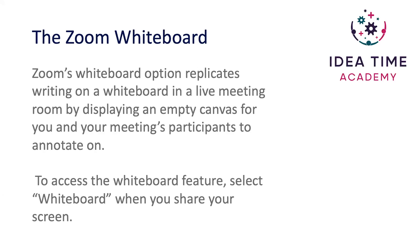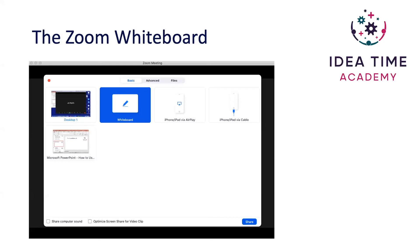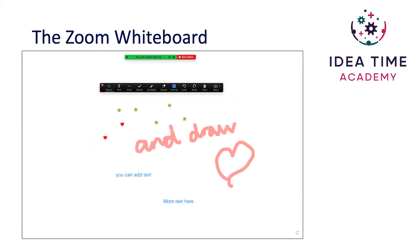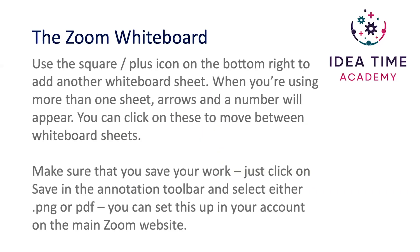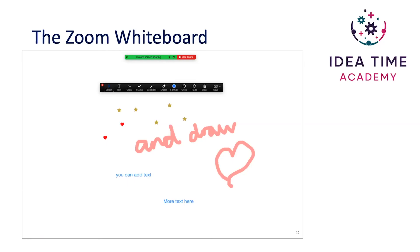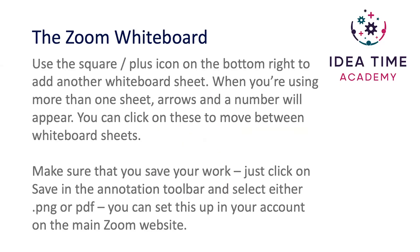All you need to do is click on whiteboard as we saw earlier. You can add text, doodle, stamp, and much more. Press clear if you want to clear everything. You'll notice there is a square or plus icon on the bottom right — that's an additional fresh blank whiteboard sheet. Make sure that you save your work, and you can set up to save whiteboard in your main Zoom account on the Zoom website.